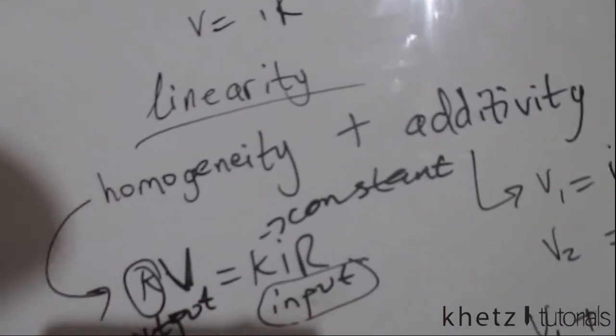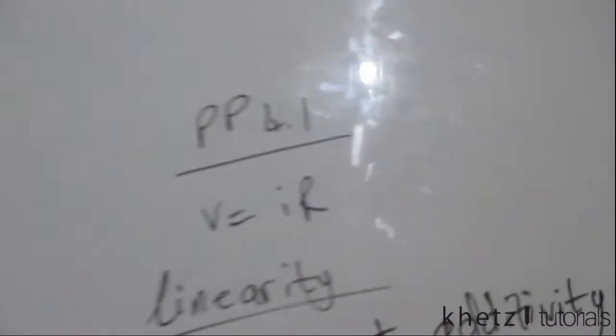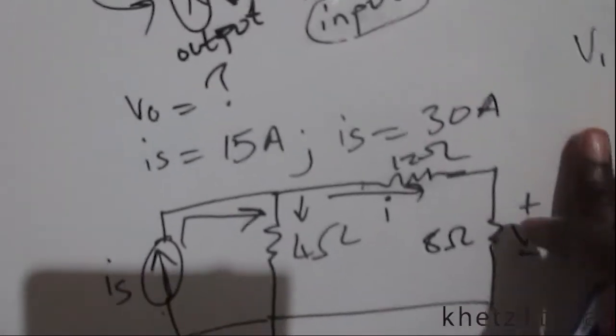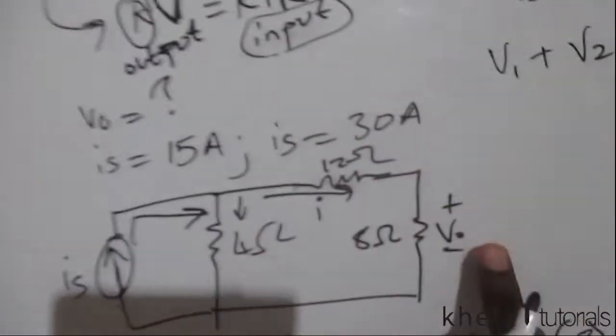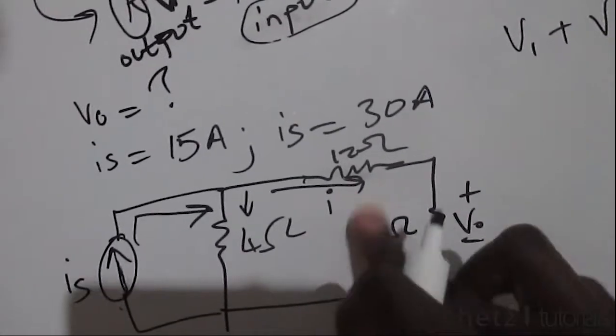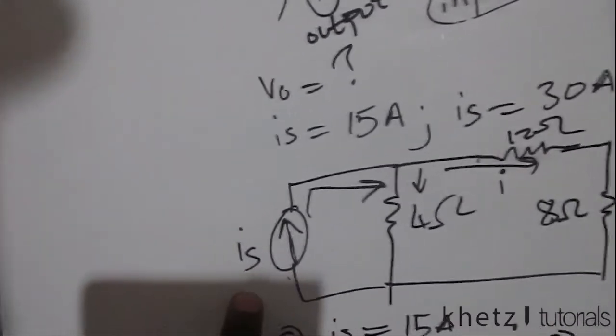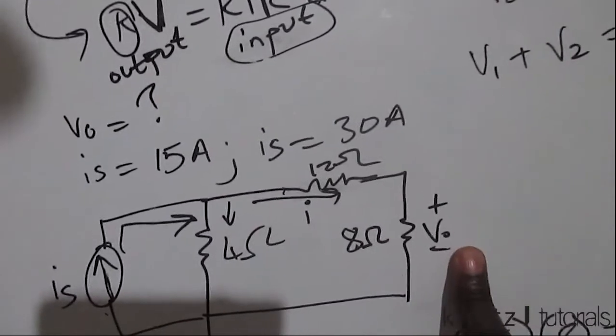So we're now going to use that knowledge to solve practice problem 4.1. This is the circuit for practice problem 4.1 and we are asked to find VO. VO is over here, it is across the 8 ohm resistor. And we have an IS here. So depending on the IS which we're given, we're going to get different values for VO.